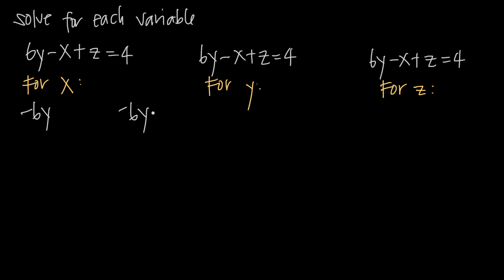So we're going to have to subtract 6y from both sides. We're also going to have to subtract z from both sides because we have a positive z here. On the left, we'll get positive 6y and negative 6y to cancel. We'll get positive z and negative z to cancel, leaving us with just negative x.